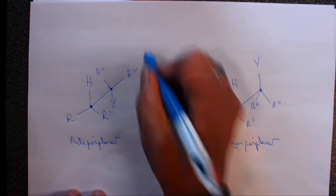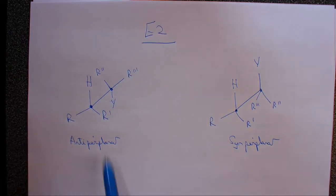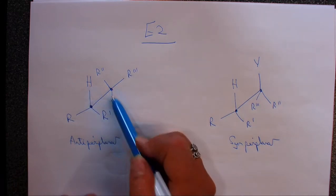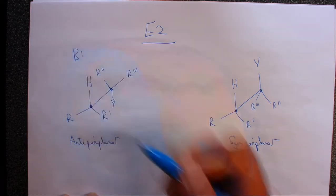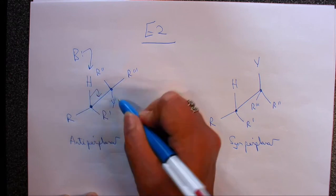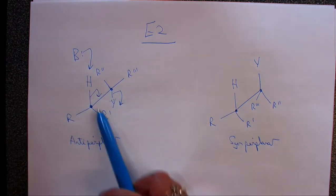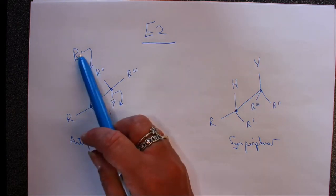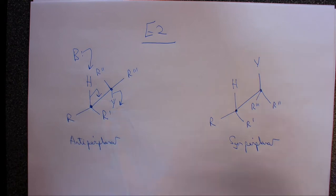So we said for E2, what we need is for the groups to be periplanar, and we've said it's better if they're anti. So it's better if they're opposite each other rather than on the same side. And that's because when our base comes along, if it was to attack here, push electrons in, it's E2, so all of this happens at the same time. When this happens, what you find is you've got less steric interaction when the base attacks from here and the centre parts are opposite, compared to here.